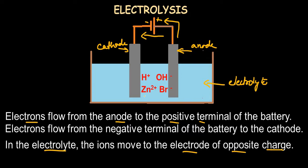In the electrolyte, the ions move to the electrodes of opposite charge. For example, in an aqueous compound with zinc, bromide, hydrogen, and hydroxide ions, the positive ions move towards the cathode (negatively charged) and the negative ions move towards the anode (positively charged electrode).